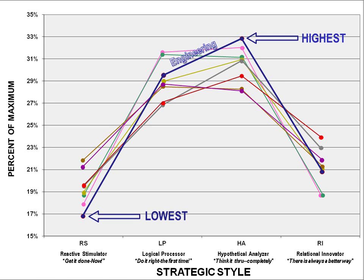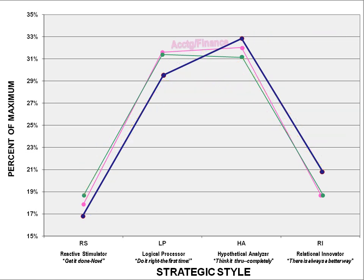But there is more. Only accounting and logistics exceed engineering in a methodical, careful, and deliberate LP style action. And engineers have a lower commitment to the speculative, idea-generating RI style. So even in their secondary style choices, engineers tend toward the more pronounced of the postures. Standing out like this is a good way to get your behavioral quirks noticed.